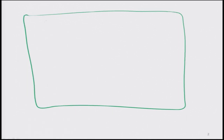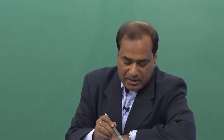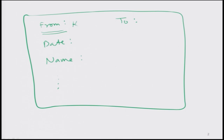I will ask you a simple question: have you ever seen a train ticket? In that train ticket, they already have printed something like this. Suppose this is my train ticket — they have already printed fields like 'from', 'to', 'date', 'name of the passenger', and so on. This is already there in the ticket. Whenever someone goes to the ticket counter, they will ask where you want to go.